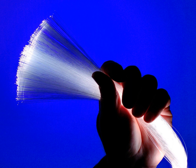Fibers have many uses in remote sensing. In some applications, the sensor is itself an optical fiber. In other cases, fiber is used to connect a non-fiber optic sensor to a measurement system. Depending on the application, fiber may be used because of its small size, or the fact that no electrical power is needed at the remote location, or because many sensors can be multiplexed along the length of a fiber by using different wavelengths of light for each sensor, or by sensing the time delay as light passes along the fiber through each sensor. Time delay can be determined using a device such as an optical time domain reflectometer.